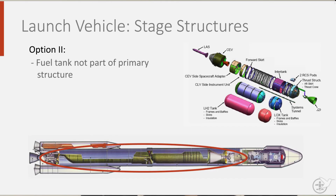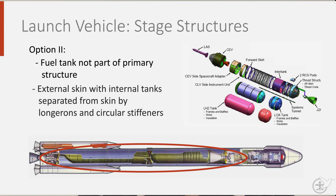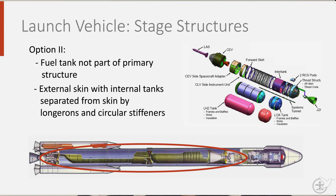A second option is a separate tank, which is not part of the primary structure. There is an external skin, with the internal tanks separated from the skin by longerons and circular stiffeners. The infamous V2 rocket had such a structure.